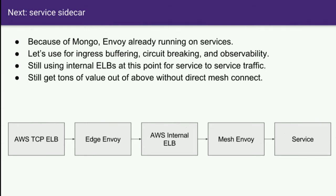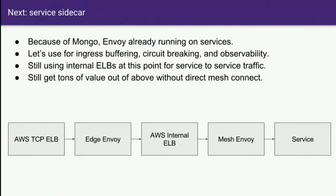Even with the ELB in the middle, because we're running Envoy on both sides, we still get really amazing stats — all the egress stats from the edge nodes, all the ingress stats on the PHP nodes. We can do things like buffering to deal better with PHP/Apache traffic handling. So we're still getting lots of benefits.